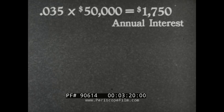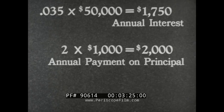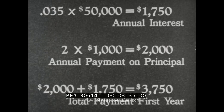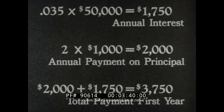Two one-thousand-dollar bonds are paid off each year. Two times one thousand is two thousand dollars annual payment on principal. Two thousand dollars plus seventeen hundred fifty dollars is thirty-seven hundred fifty dollars total payment for the first year. This is the payment made out of the year's taxes.